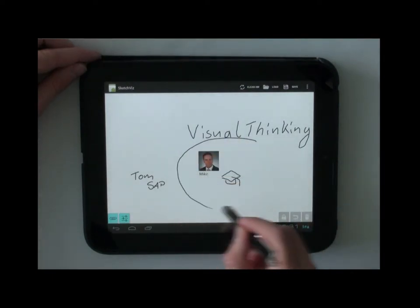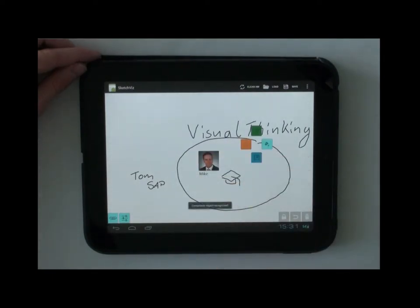After that, he can create a category around Mike. He may choose a predefined category. Here, the user selects the green one.